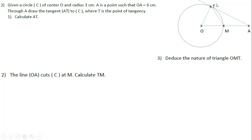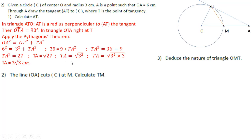Since AT is a tangent to the circle and OT is a radius, triangle OTA is right at T. We have OT = 3 cm and OA = 6 cm. Applying the Pythagorean theorem, AT = 3√3 cm.